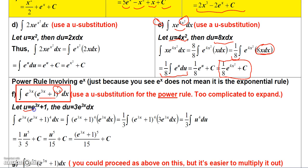Let u equal e^(3x) + 1. Then du is the derivative of that: the derivative of e^(3x) is 3e^(3x), so du equals 3e^(3x) dx. The original integral has e^(3x) times (e^(3x) + 1)^4.